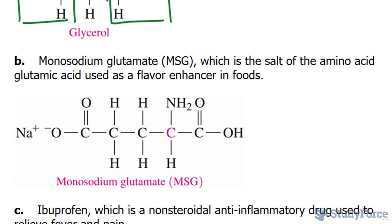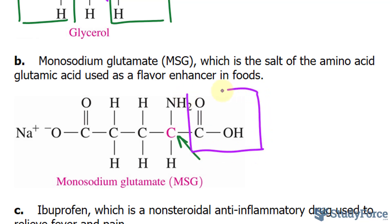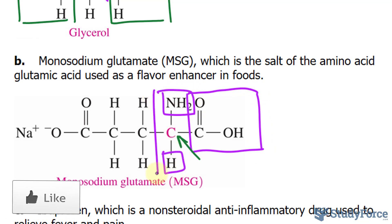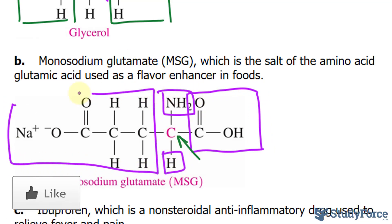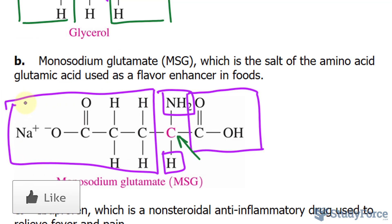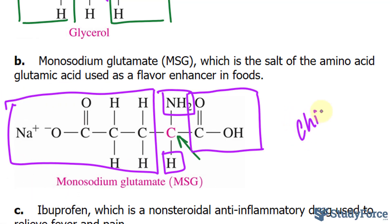In question B, we have monosodium glutamate, which is a salt of the amino acid glutamic acid used as a flavor enhancer in foods. So we're focusing on this one, and let's look for substituents that are the same. There's the carboxylic acid part, there's also NH2, H, and the rest of the molecule. None of these are the same, so we say that this carbon is chiral.